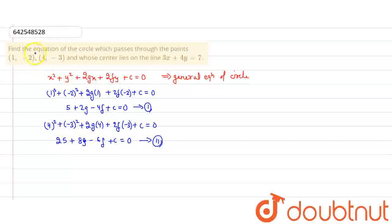Now, we know the center is (-g, -f) and it lies on this line. So this becomes 3(-g) + 4(-f) = 7. Now we have 3 equations and 3 variables.